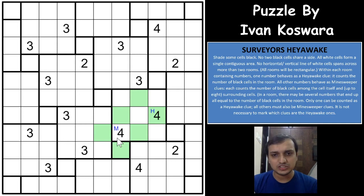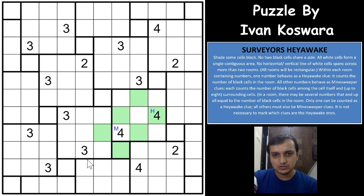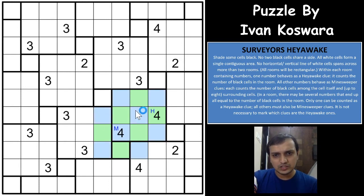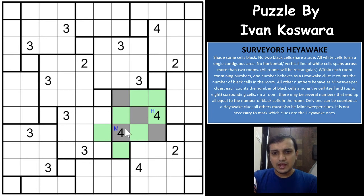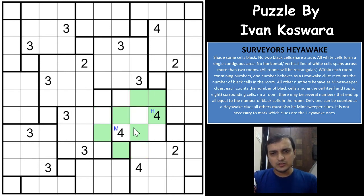Now we know that this cell is the Heyawake clue, so out of these 5 cells, 4 cells will be shaded. And since this is the Minesweeper clue with 4, as we have already seen, those 4 middle-edge cells will be unshaded. Now there is one more very good logic here: out of these 5 cells, 4 will be shaded, and for the other set of 5 cells, 4 will also be shaded. This is a very symmetrical pattern. If you unshade one of these cells, all 4 of the other cells will be shaded and both of these cells will have to be unshaded, leaving only 3 cells shaded for the other 4 clue — which is not possible. So both of these cells will be shaded.